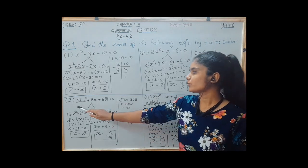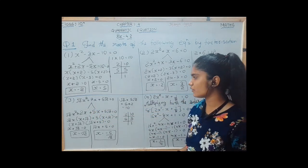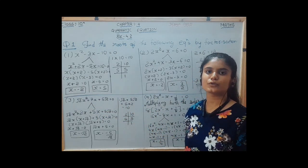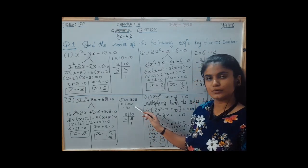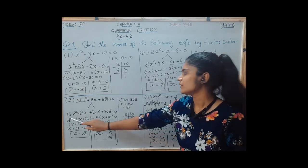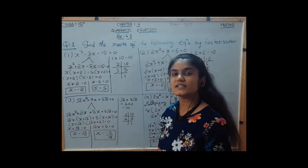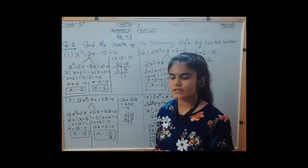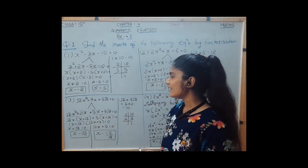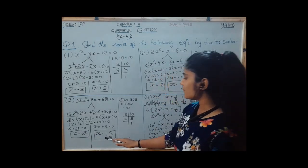In question number 3, root 2 x squared plus 7x plus 5 root 2 is equal to 0. We multiply root 2 by 5 root 2 to get 10, and the factors of 10 are 2 and 5. The four-term quadratic equation becomes root 2 x squared plus 2x plus 5x plus 5 root 2 equals 0. By making pairs and taking common, we get the roots as minus root 2 and minus 5 upon root 2.